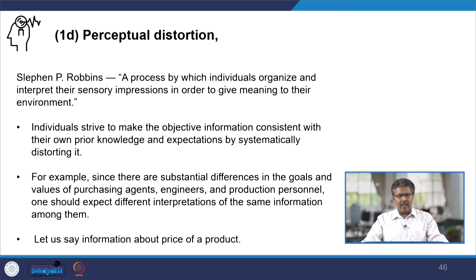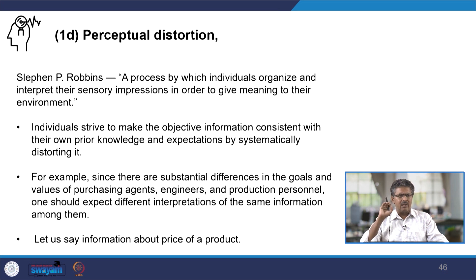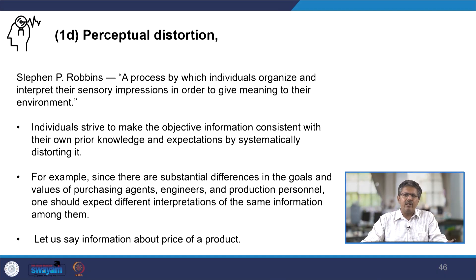The fourth point is perceptual distortion — a very difficult thing to understand. Robbins defines perception as a process by which individuals organize and interpret their sensory impressions in order to give meaning to their environment. Perception is a process by which individuals try to interpret sensory impressions to give meaning to whatever they are looking at, feeling, or observing. This can sometimes get distorted because of new information or new signals coming from the market. What happens is individuals strive to make the objective information consistent with their own prior knowledge.